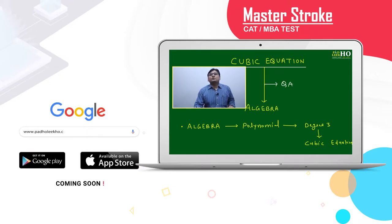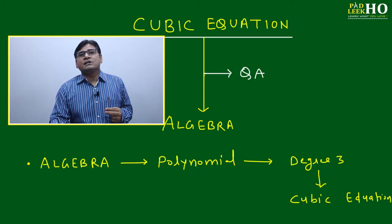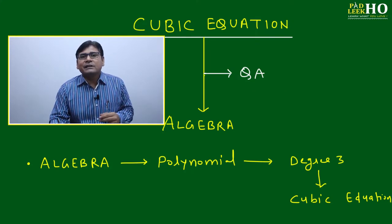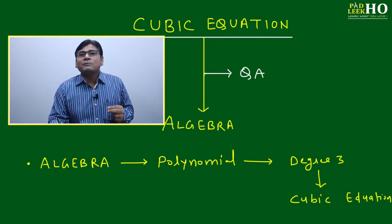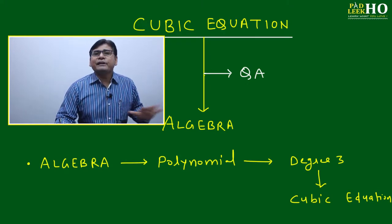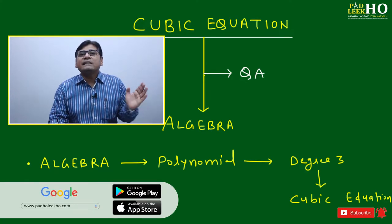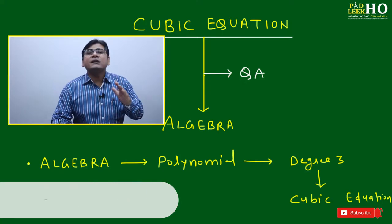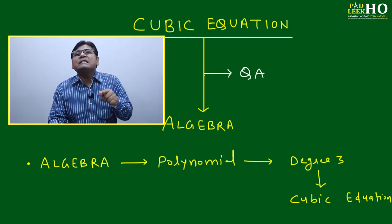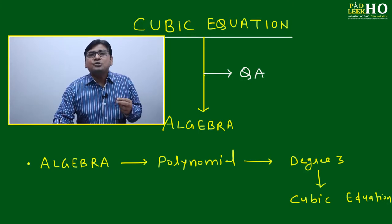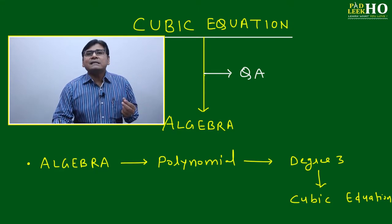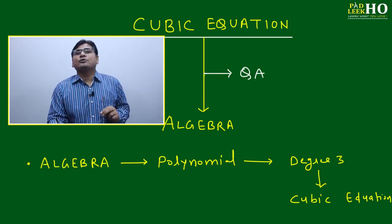This master's talk is related to the cubic equation. A cubic equation is one type of polynomial that comes under algebra. After the quadratic equation, the next important type is the cubic equation, because very frequently in CAT or other MBA tests, quadratic and cubic equation questions are asked. We should be very well aware of the basic concepts of cubic equation and how the roots are placed on the number line.